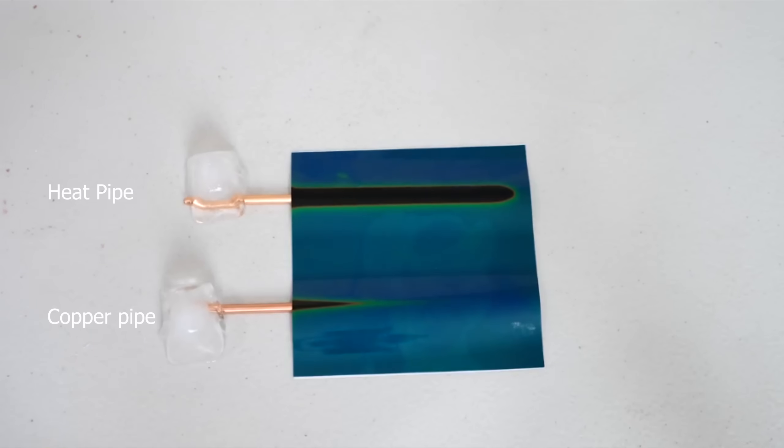So the tube starts off at a very low pressure, but as you heat up one end of it, the water that is at that end of the pipe heats up. And when it heats up, it vaporizes. And as it vaporizes, the pressure increases.